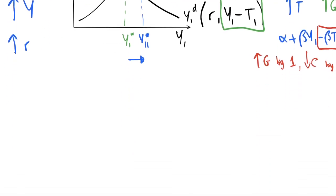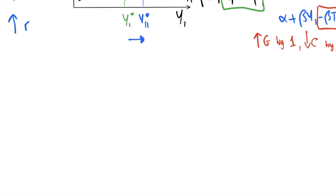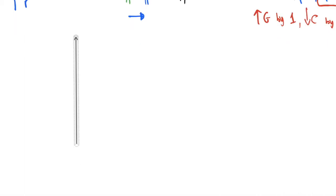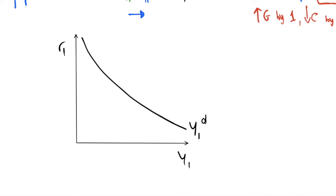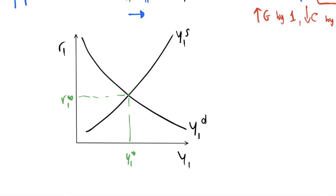Now we can look at what happens when we have a temporary increase in government spending in the Keynesian model. I'll draw up another set of axes with the interest rate on one axis and output on the other, exactly as in previous videos. We have the same aggregate demand curve and aggregate supply curve, with an initial equilibrium to compare against the changes.